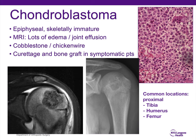Chondroblastoma is another benign aggressive lesion that forms in the epiphysis, mostly in skeletally immature patients, and tends not to cross the physis. There's plenty of edema and joint effusion seen on MRI. It has a cobblestone chicken-wire appearance on histology. The treatment is curettage and bone graft in symptomatic patients. Common locations are the proximal tibia, proximal humerus, or proximal femur. In the tibia, a trans-physeal approach can be one of the best ways to access the tumor, whereas this is not always possible with lesions in the proximal femur or proximal humerus.